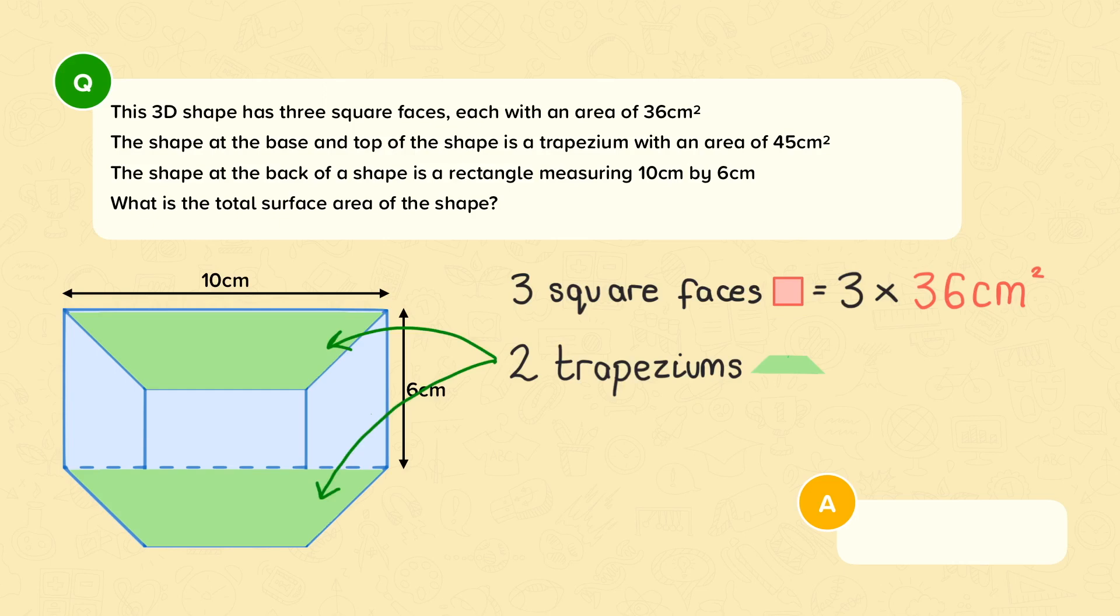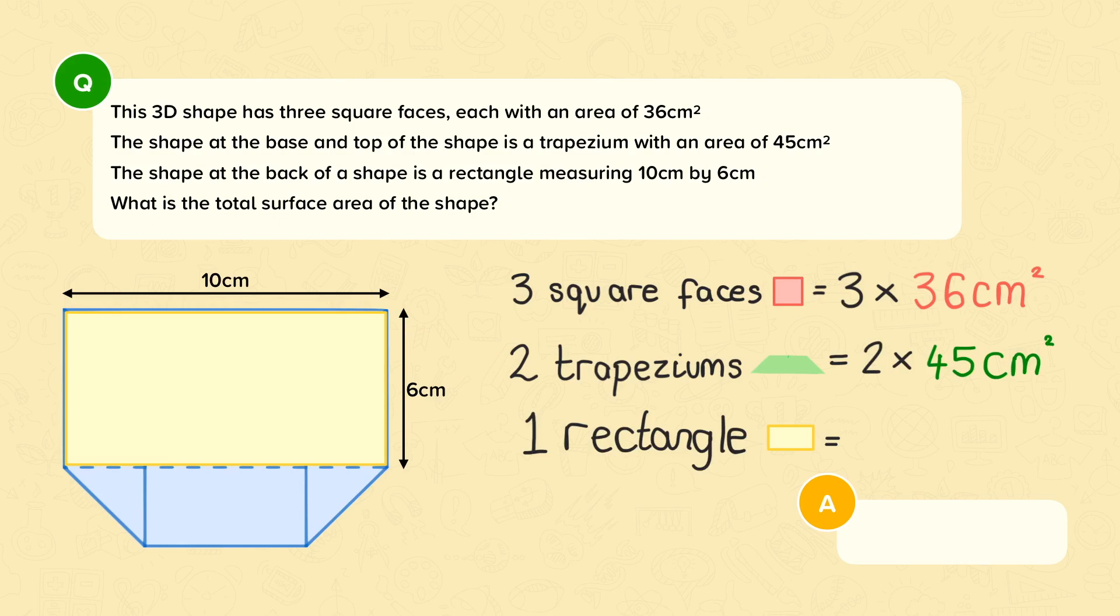Which is 10 by 6cm, which is 60cm squared. So 3 times 36 is 108cm squared. 2 times 45 is 90cm squared.